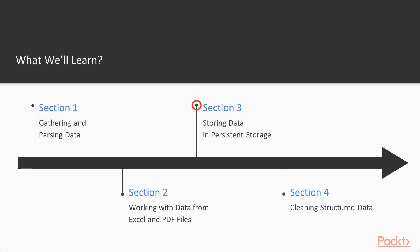In Section 3, I will be showing you the most commonly used data storage systems in industry, like MongoDB, SQLite3, and Elasticsearch. I will introduce each database in that section and you will see the advantages of using each one of them.